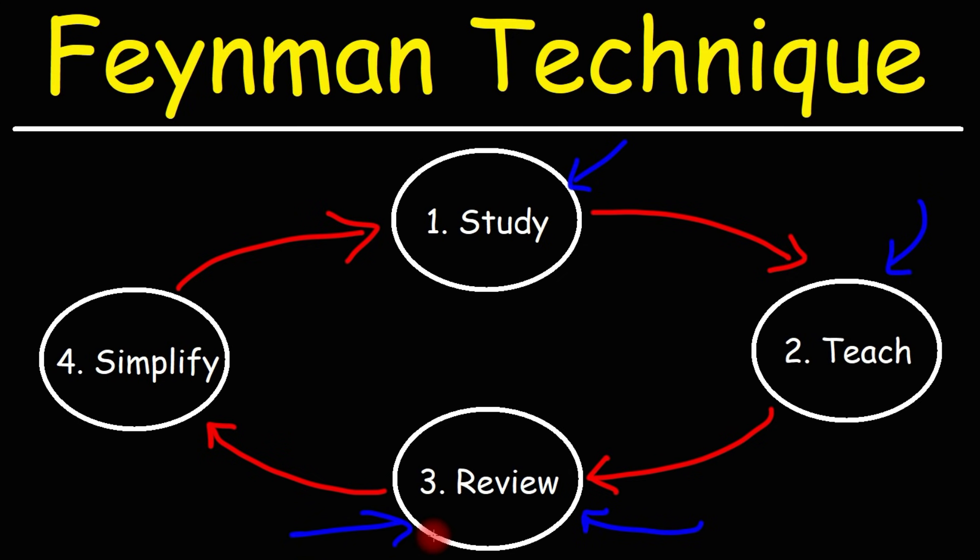So, that third step, reviewing to fill in the gaps of what you don't understand, that's part of the Feynman technique. Now, as you try to explain what you've learned to someone else in step two, when they ask you questions and if you feel like you can't answer it, that's how you can identify gaps in your understanding. And that's when you go to step three, to review the material again, to fill in those gaps that you've missed.